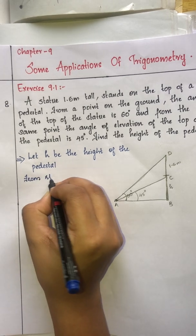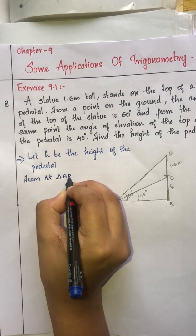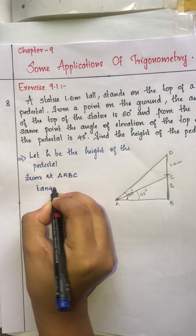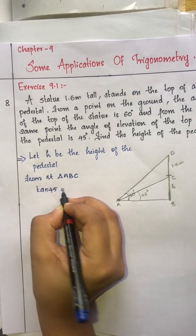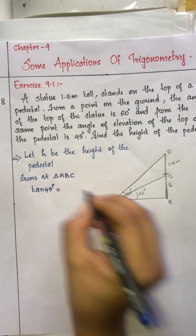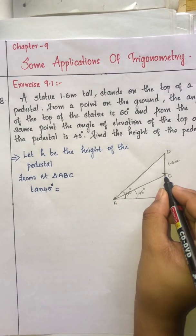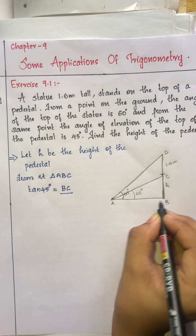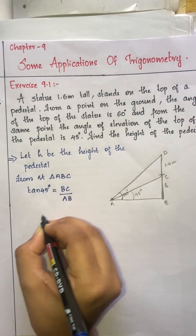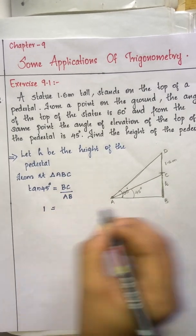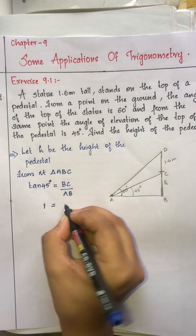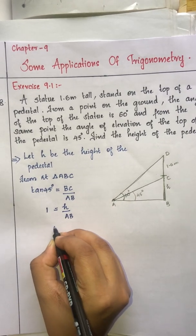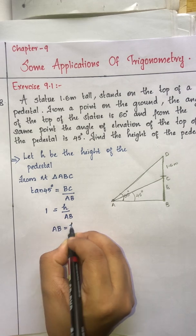From right triangle ABC, tan 45 equals the opposite side divided by the adjacent side — that is BC divided by AB. Since tan 45 equals 1, we get BC over AB equals 1, so AB equals h, which is the height of the pedestal.